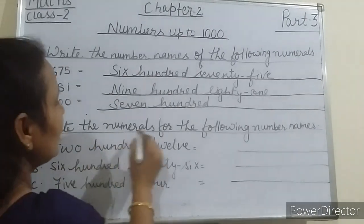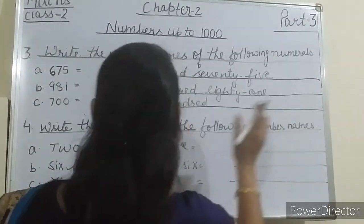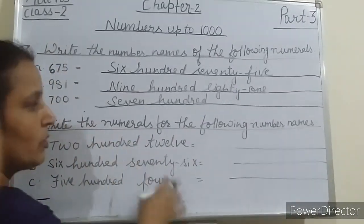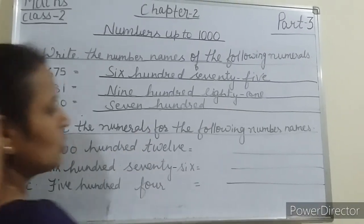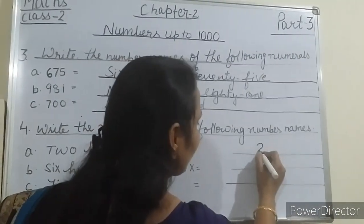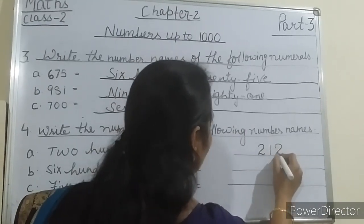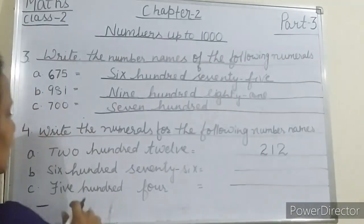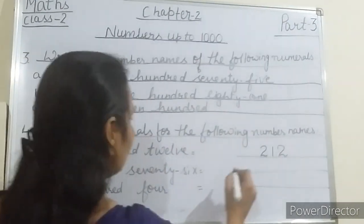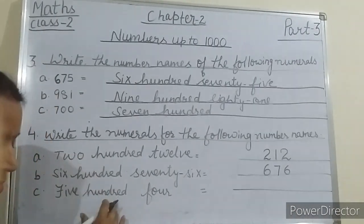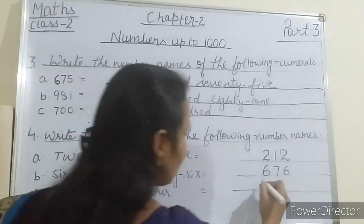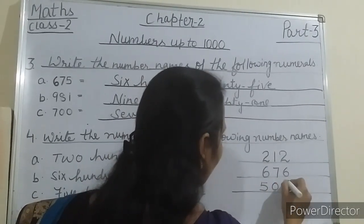So fourth question: write the numerals for the following number names. Now what you have to do — you have to write the numerals. Here the number names are written and you have to write the numerals. So two hundred twelve — how will you write? Two hundred twelve. Here, six hundred seventy-six. And the last one, five hundred four — how will you write? Five hundred four.